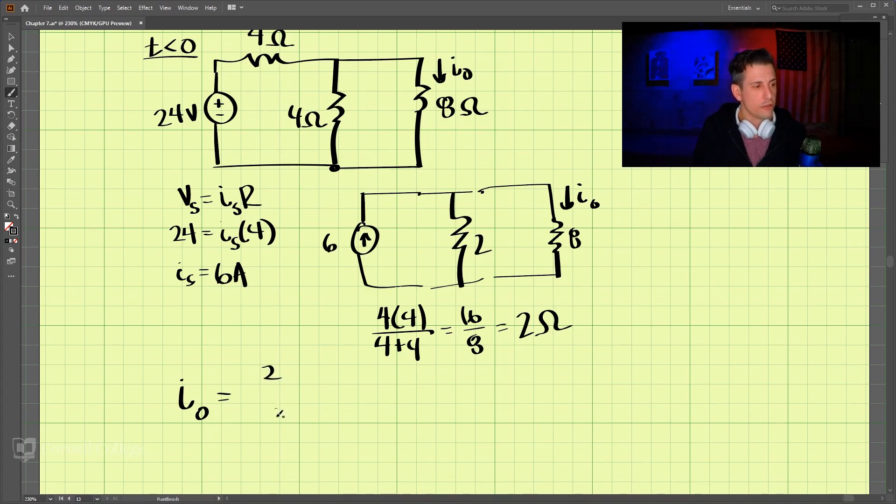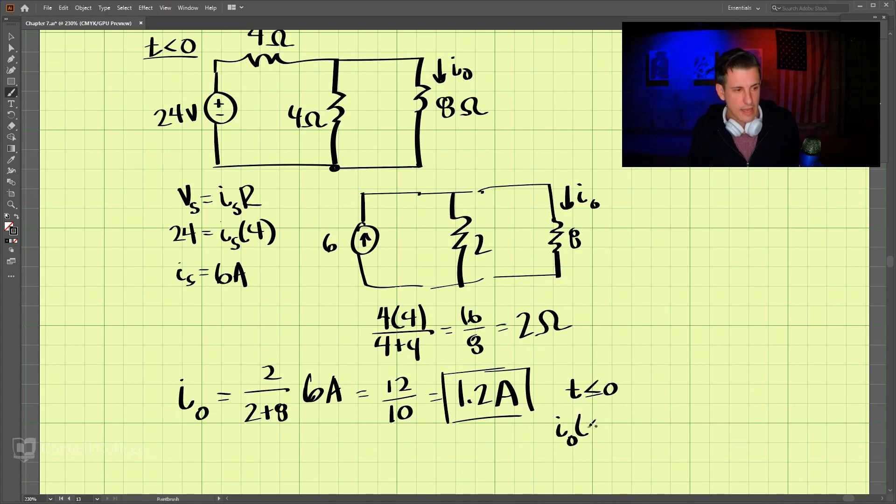So that is equal to 2 divided by 2 plus 8 times our 6 amps here. So I-naught is then 12 over 10, which equals 1.2 amps. So that is for T equal to 0. So this is for T is less than or equal to 0. So the I-naught at 0 is 1.2 amps here.